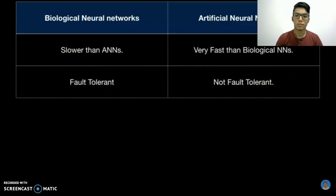The second point is that biological neural networks are fault tolerant. Fault tolerant means even if some part of the neuron is damaged, then it will still work at a slower rate, but it will still work. Whereas in an artificial neural network, if some part of the neuron gets damaged or gets affected, then the artificial neural network will not work.